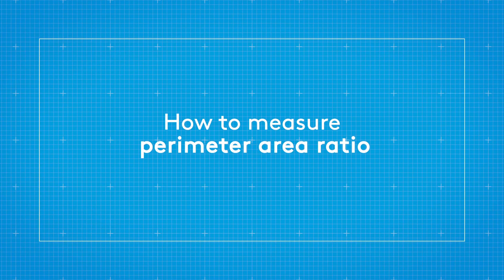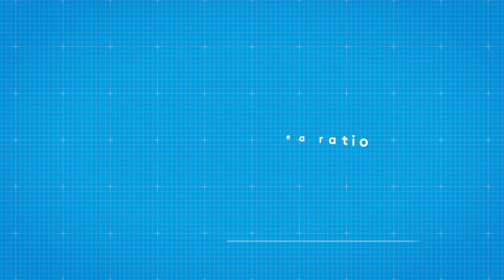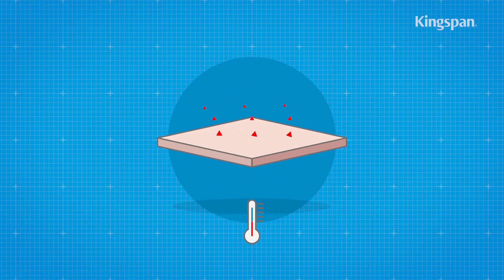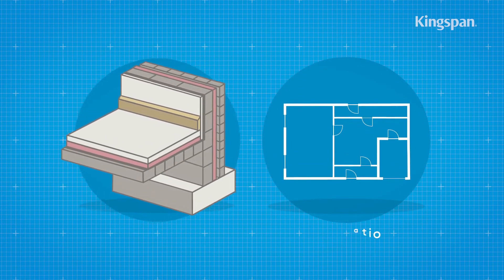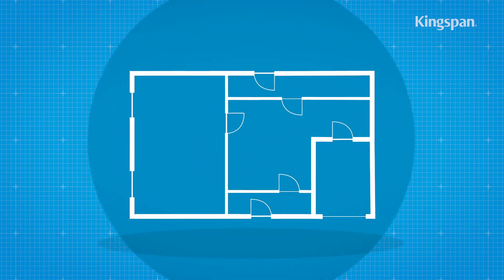How to measure perimeter area ratio. To calculate how much floor insulation you need, you need to know your floor build-up and work out your perimeter area ratio. This can be obtained from your floor plan.